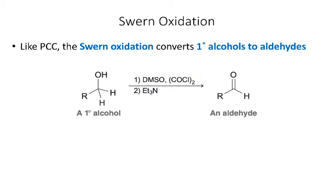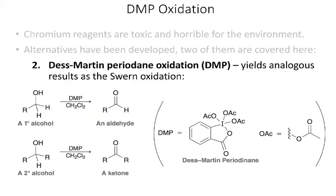Like PCC, the Swern oxidation stops at the aldehyde and won't further oxidize the aldehyde to a carboxylic acid. The book also mentions a second green oxidation reaction called DNP oxidation as another green alternative to chromium reagents, though we won't be responsible for that one.